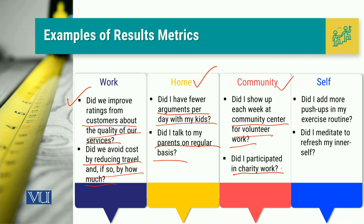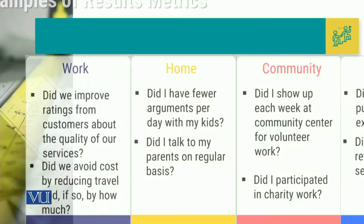The fourth perspective is myself. Have I done some push-ups as part of my exercise routine? Did I meditate to refresh my inner self? If these things are done, that means I am also focusing on improving my relationship with my own self. These are the result matrices which we can fill in the previous exercise.